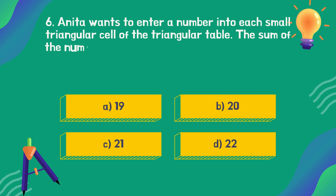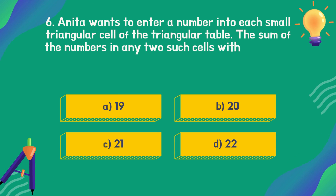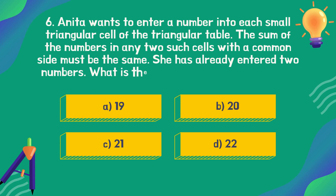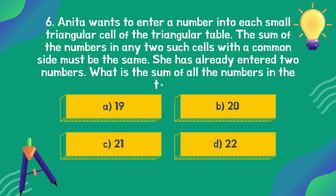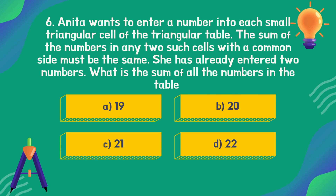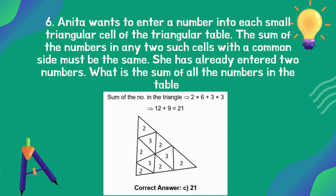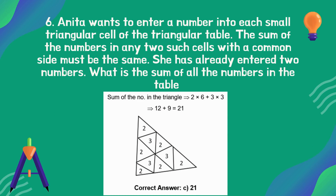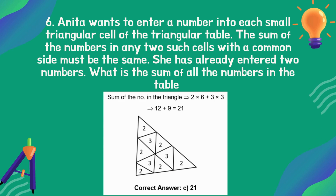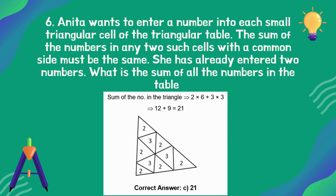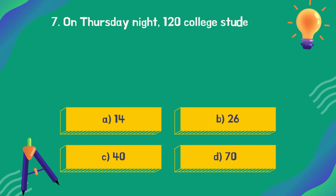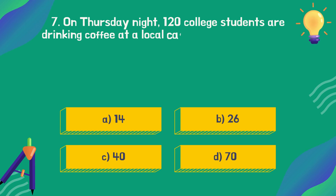Anita wants to enter a number into each small triangular cell of a triangular table. The sum of the numbers in any two cells with a common side must be the same. She has already entered two numbers. What is the sum of all the numbers in the table? The correct answer is option C: 21.